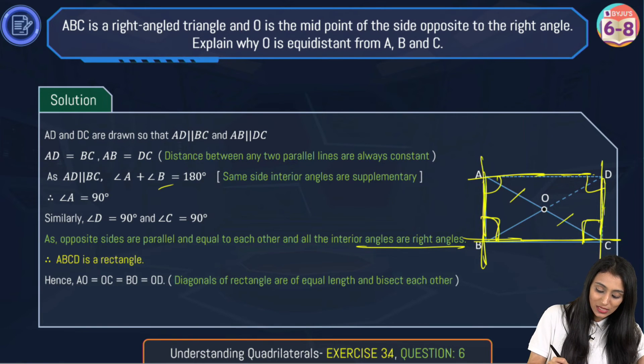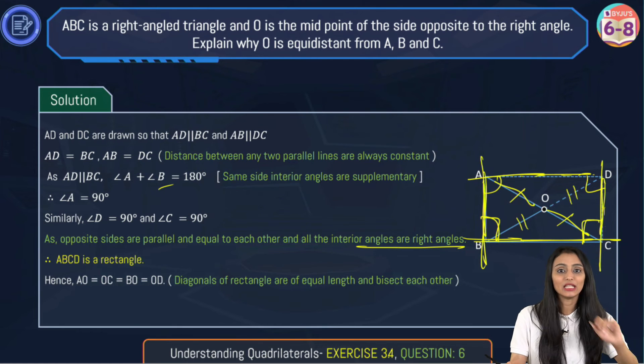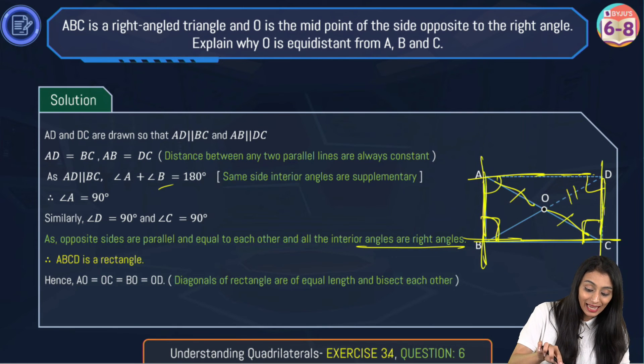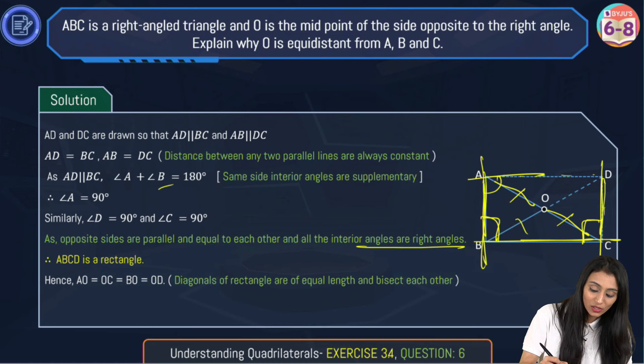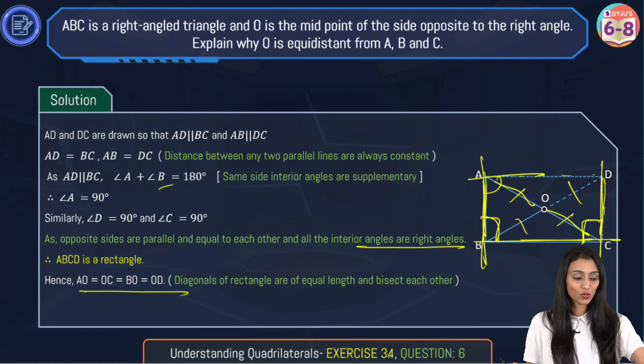So OA is equal to OC, OB is equal to OD over here. So OA and OC, these were already equal, right? Also we know that diagonals over here are equal in length, so their halves will also be equal. So they all are equal: OA, OB, OC, and OD.